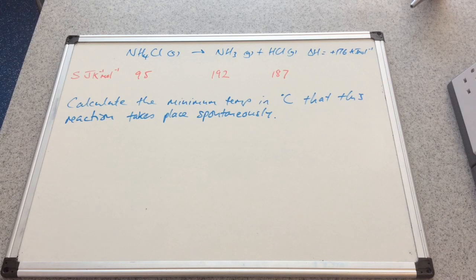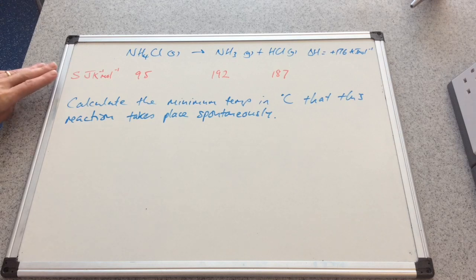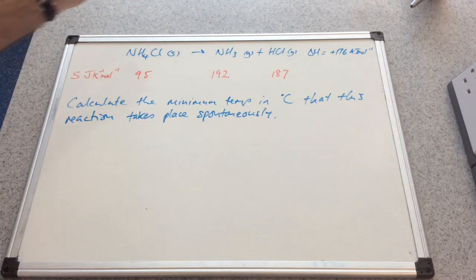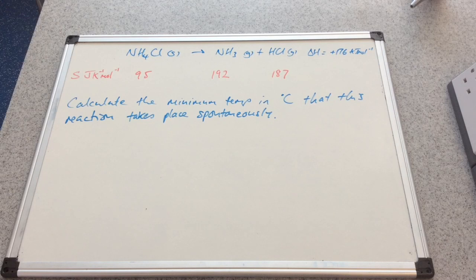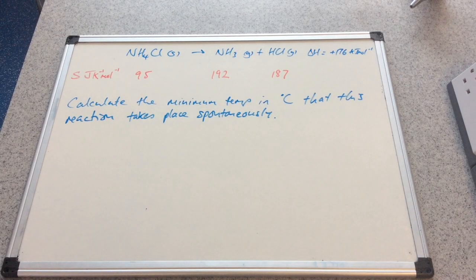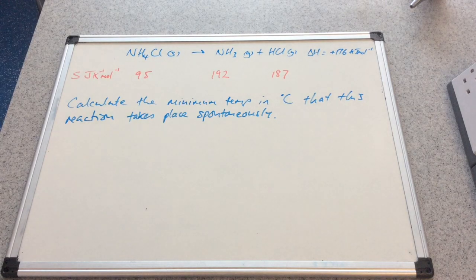And we're told that the enthalpy change, delta H for that reaction is plus 176 kilojoules per mole. In red we've got the entropy values in joules per kelvin per mole for the substances in this equation: 95 for the ammonium chloride, 192 for the ammonia and 187 for the HCl. Calculate the minimum temperature in degrees C that this reaction takes place spontaneously.